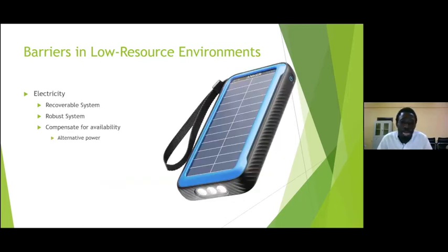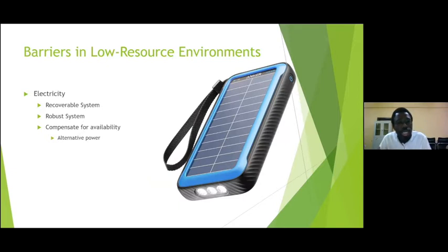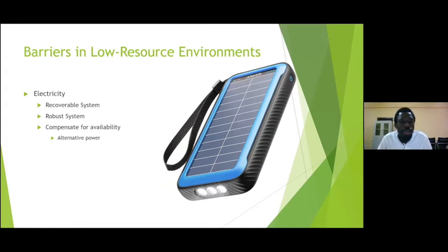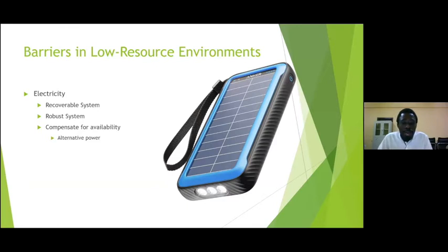Next, of course, is electricity. It's nice to talk about AI, but AI definitely requires electricity at all times to work. Unfortunately, we will encounter places where there is not constant electricity. For a country like Ghana, even in urban areas we do not constantly have electricity. Any deployment you do would have to compensate for electricity availability. Your system must be recoverable: if the power goes off on your AI system, it should not crash — it must be robust both in hardware and software so that once it goes down and comes back up, it returns to exactly where it was.